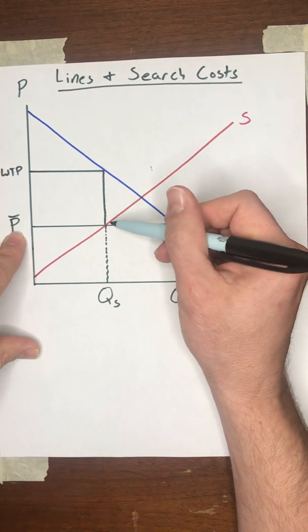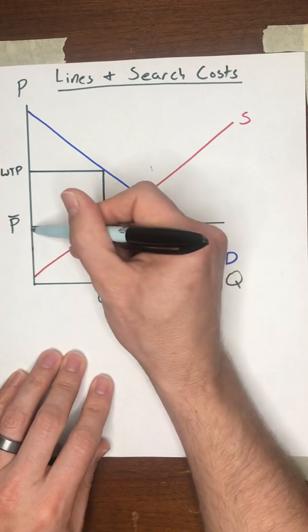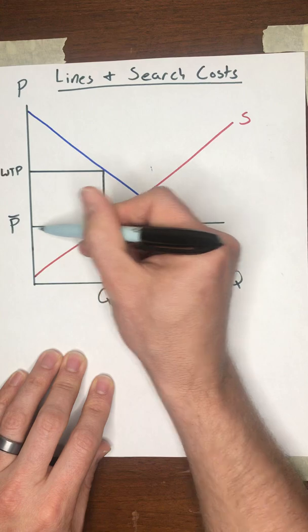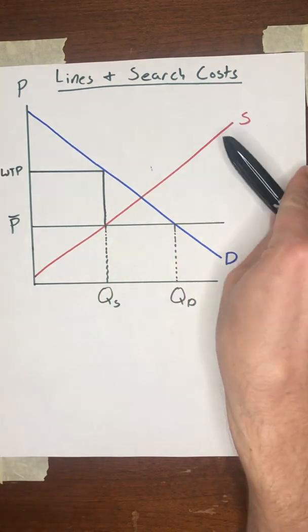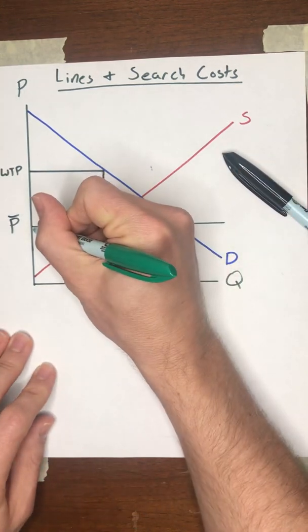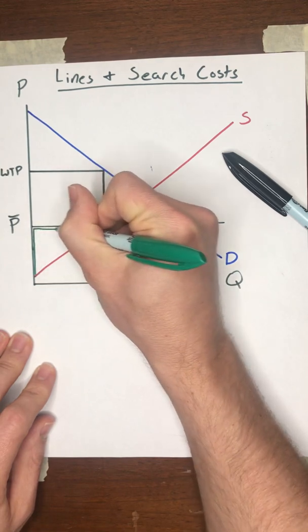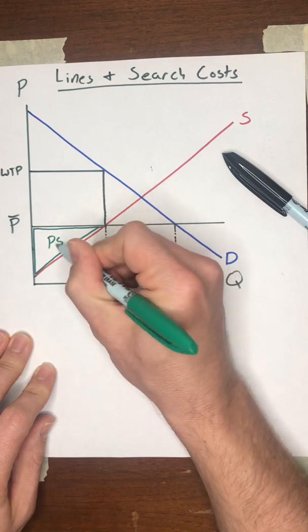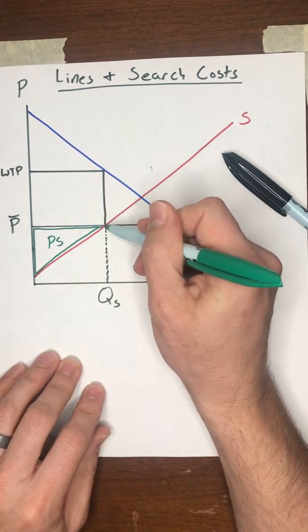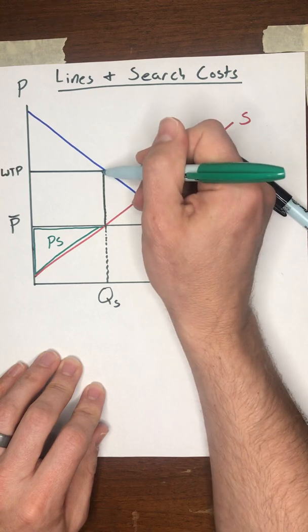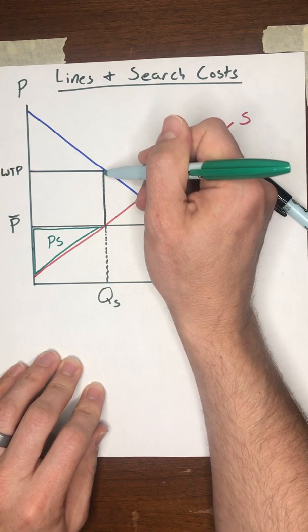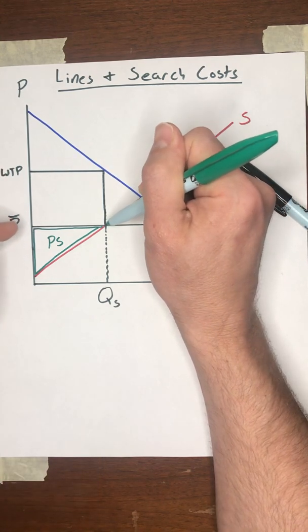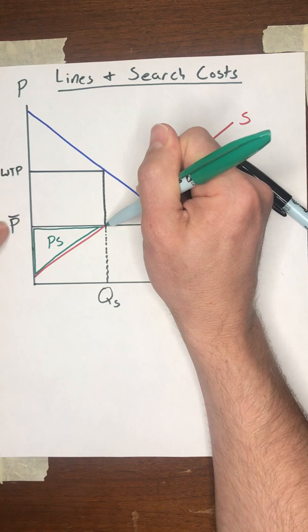Let's think about what would happen under those circumstances. Let's say that all of the buyers do end up only being willing to pay this low price down here. They're not going to bribe, they're not going to pay black market prices. So producer surplus ends up filling this area right here. So you're not paying this amount to the sellers. However, how much consumer surplus would you end up with in this case? Well, the buyers are paying this dollar price P bar to the sellers.